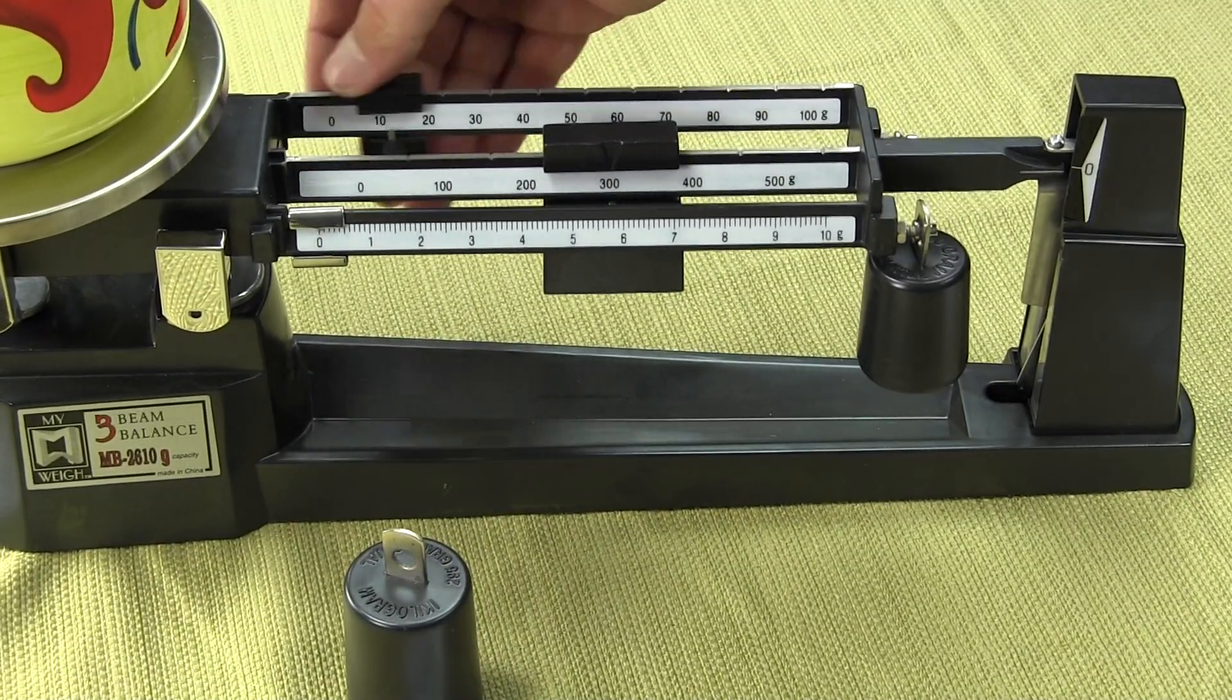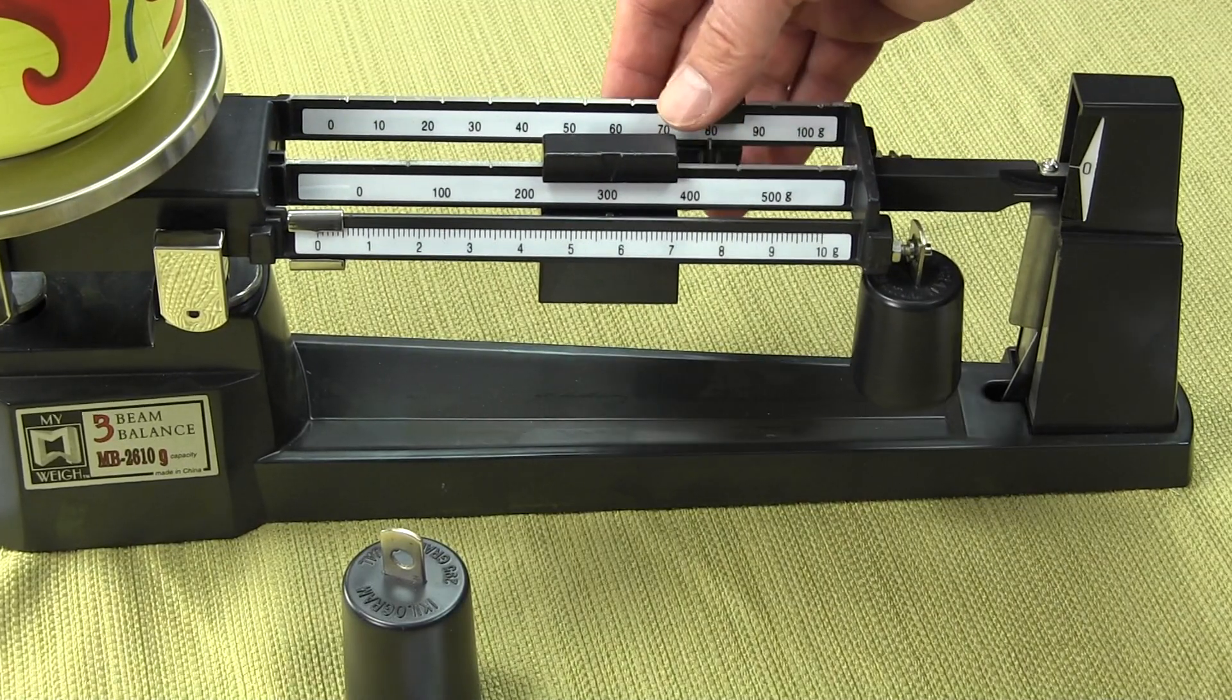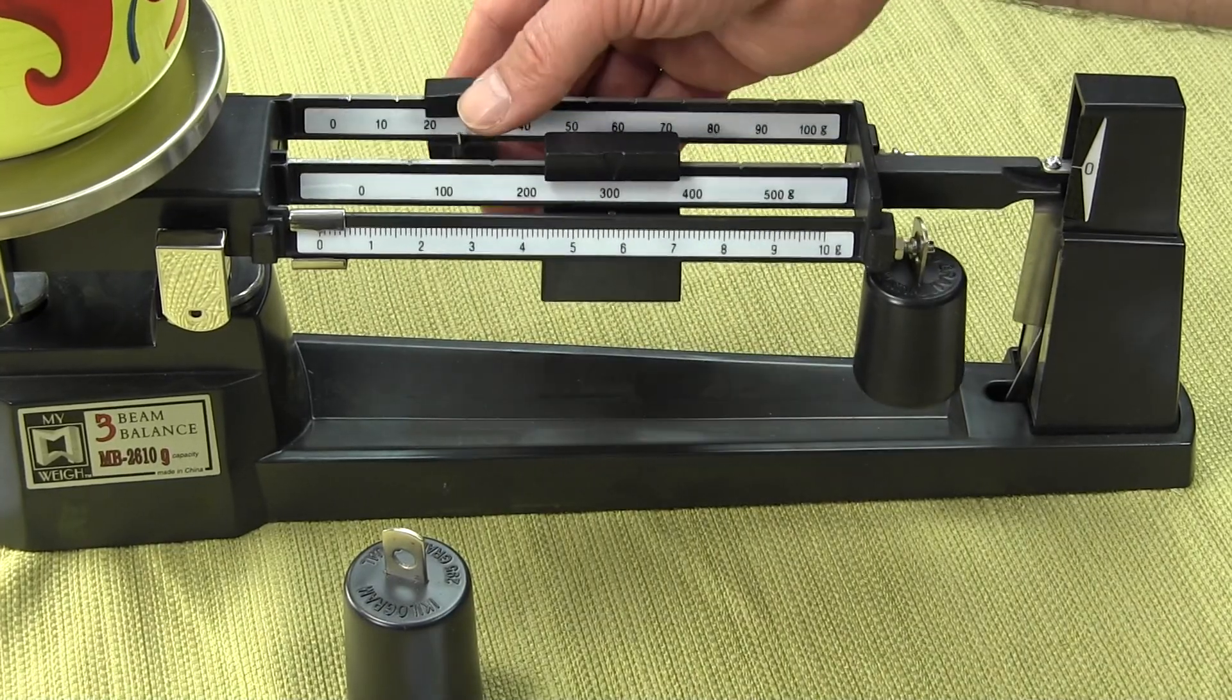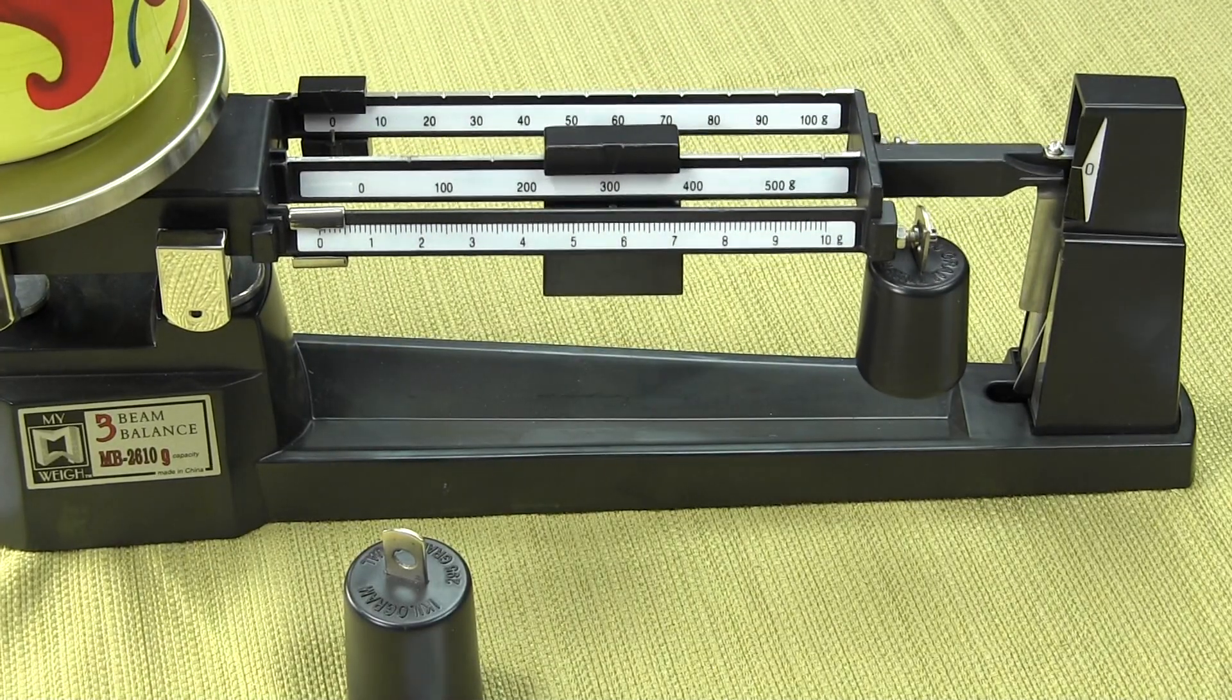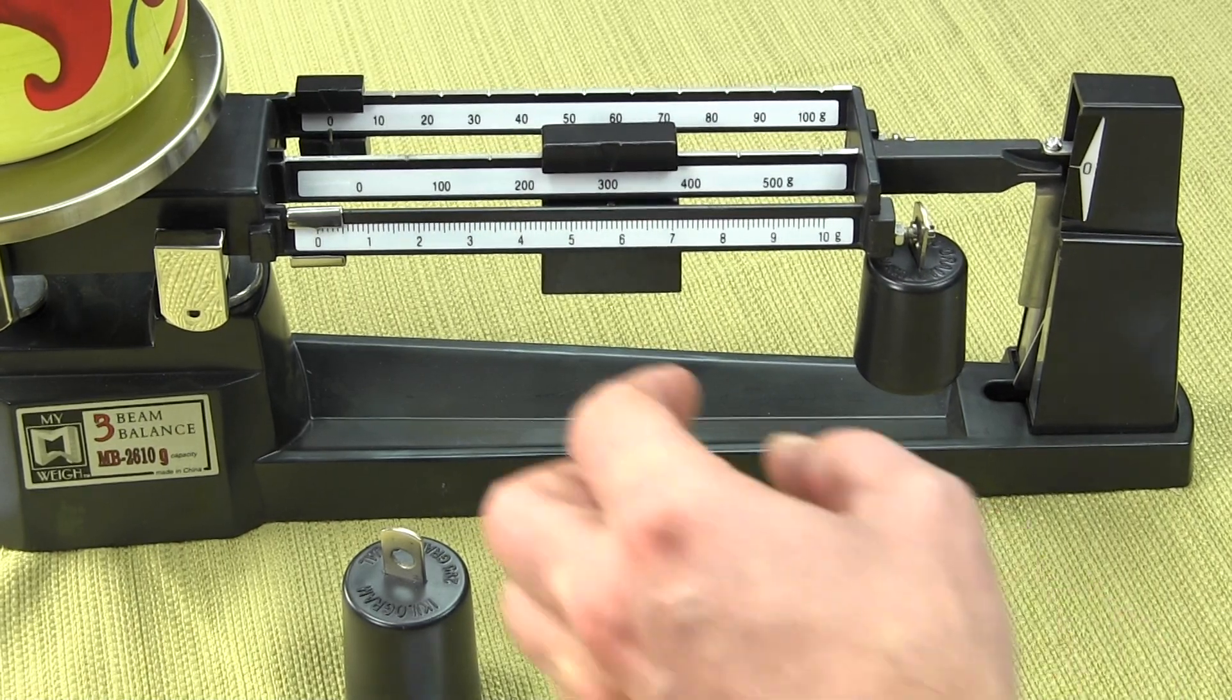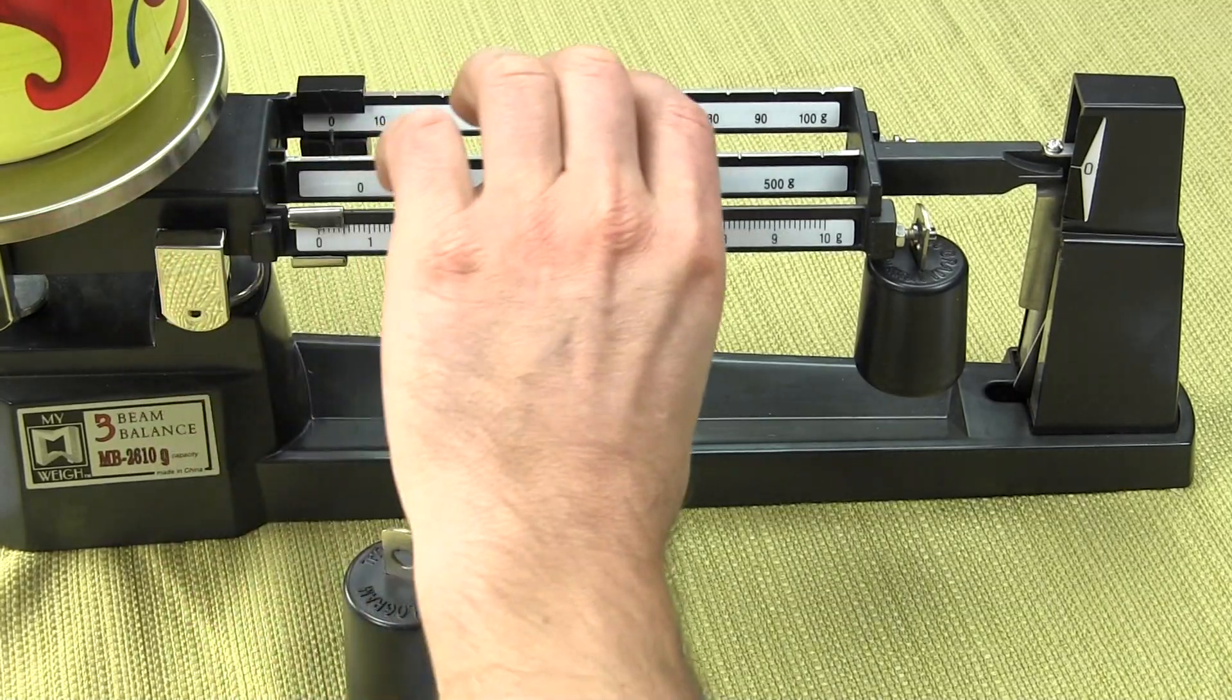Now we're going to use the 0 to 100 and it's the same deal. Just stop pulling it back until the beam goes up. Now we'll just use the front.